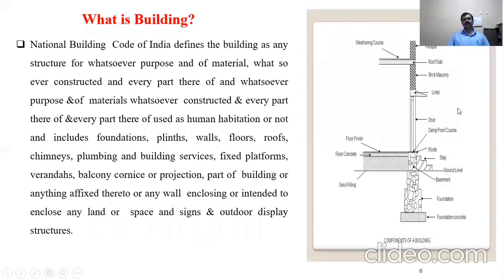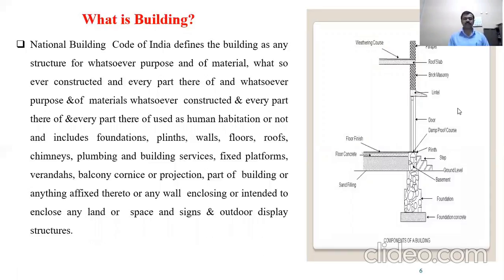What is the meaning of a building? A building is nothing but a structure which includes foundation, plinth, wall, floors, roof, chimney, plumbing system, building fixtures, platform, veranda, balcony, etc. That diagram shows the different components of a building.